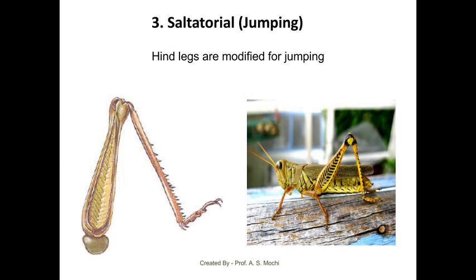The next is the saltatorial type of legs, found in case of grasshopper. Here there is a modification found only in the hind legs. These hind legs are used for jumping purpose, hence known as the saltatorial type of legs.